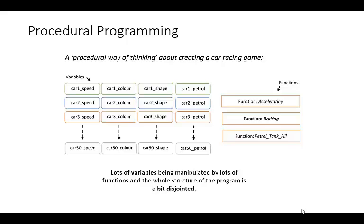So for example car one you might have a variable for the speed, for the colour, for the shape, for the petrol that it uses and then you do exactly the same for car two and car three. And before long you've got loads of different variables to store data about the different cars that you've got.